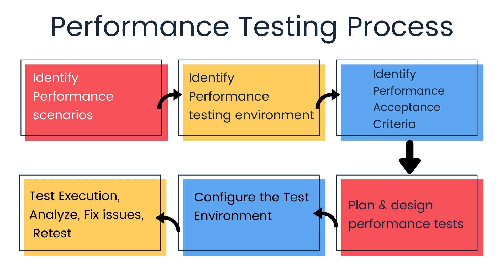The third step is to identify the performance acceptance criteria, including goals and constraints for throughput, response times, and resource allocation. It is also necessary to identify project success criteria outside these goals. Testers should be empowered to set performance criteria and goals because project specifications often will not include a wide enough variety of performance benchmarks.